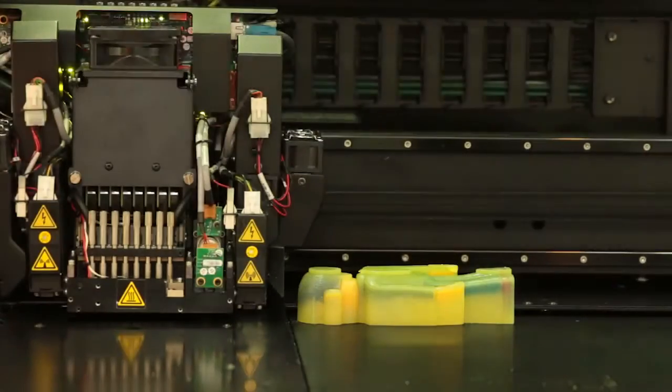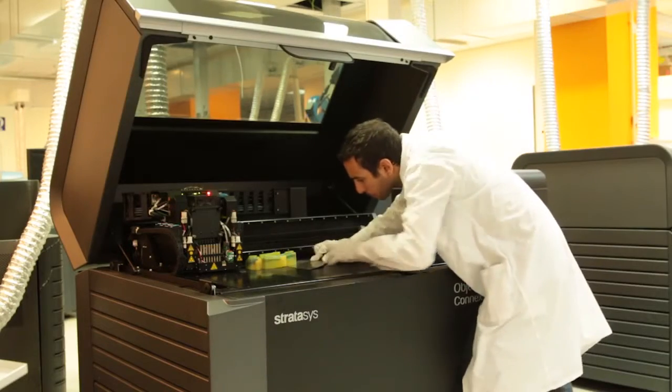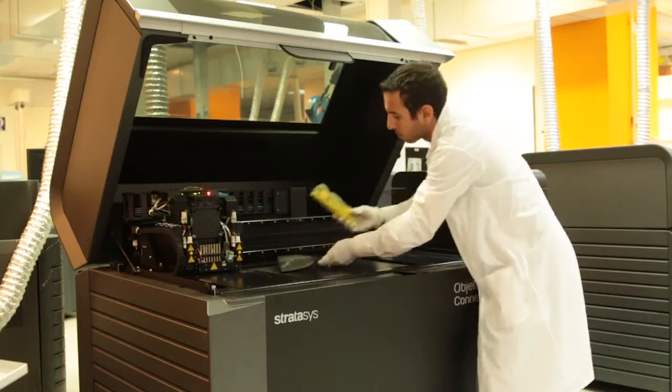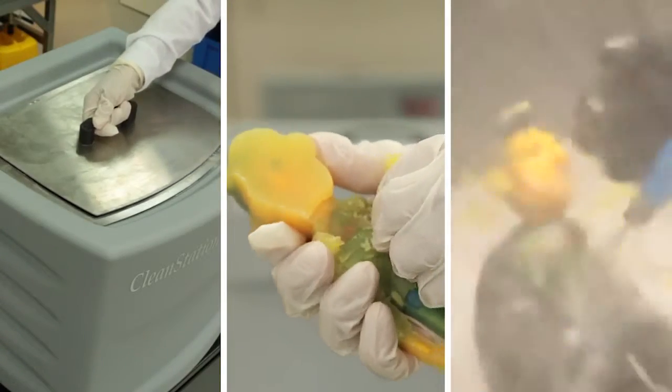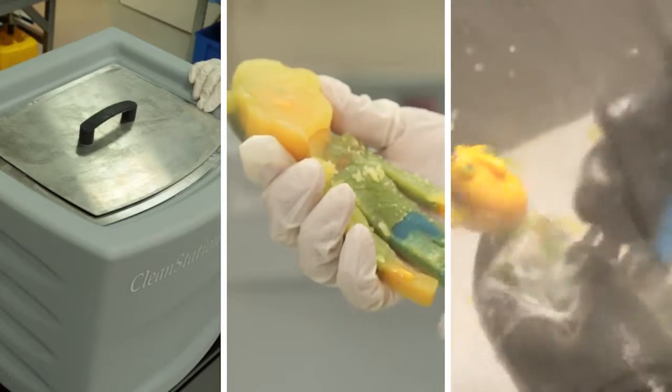Once the parts have been printed using SUP706 support material, remove them from the tray. Three different methods are available to remove SUP706 support material.